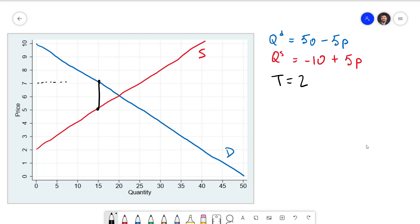7 is the price that buyers pay and 5 is the price that sellers receive. The difference is the size of the tax, 2, which is going to go to the government.